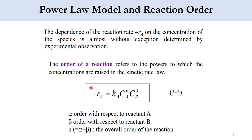Moving to the power law model: the dependence of reaction rate −R_A on species concentrations is almost without exception determined by experimental observation. Multiple experiments are needed to understand how the rate depends on concentrations. The order of reaction refers to the powers to which concentrations are raised. For reactants A and B, −R_A = K_A × C_A^α × C_B^β, where α and β are determined experimentally and define whether the system is elementary or non-elementary.